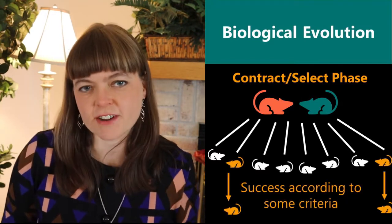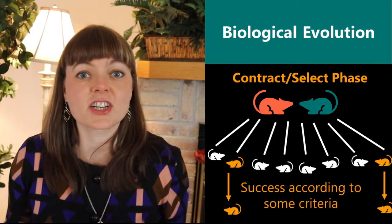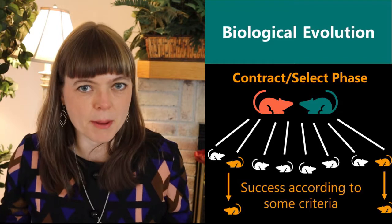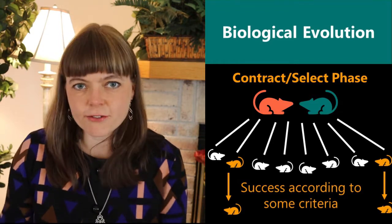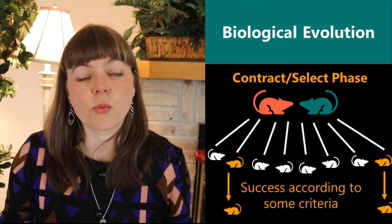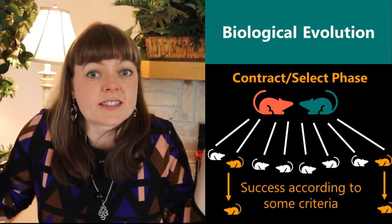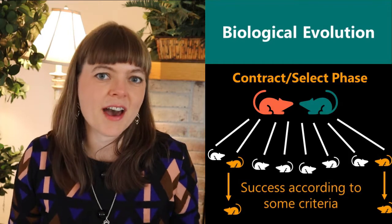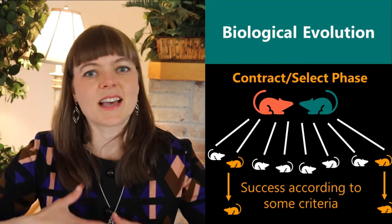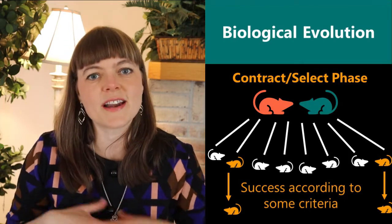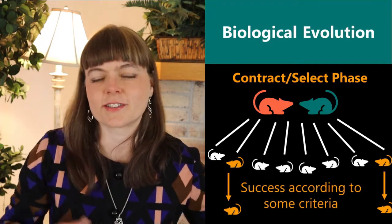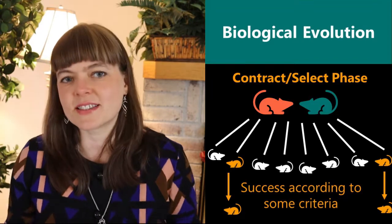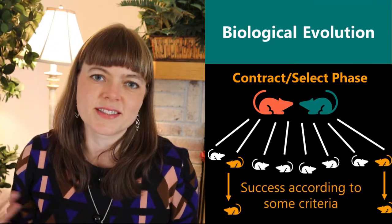And then the other phase is the contraction phase or the selection phase, where you take all of the randomly generated puppies and you select from that group the most successful or the ones that are best adapted to some criteria. Now for genetic evolution, that criteria is basically sexual success or adaptation to the environment or ability to survive above your peers. So in biology, most of the selection criteria has to do with sex and death.